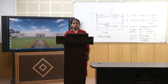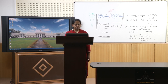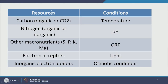For microbes to live in an ecosystem they require two things: they should have all the resources they need and they should have the right conditions to thrive. Some of the resources microbes require are carbon — autotrophic microbes can utilize carbon dioxide as a carbon source, while others require organic carbon material. Carbon must be available in the right form in the environment.